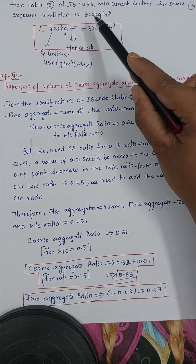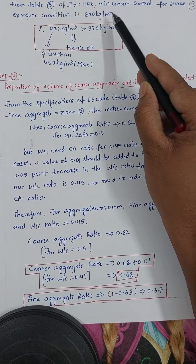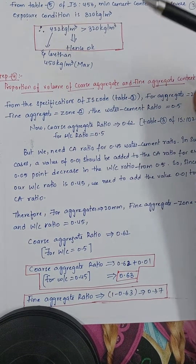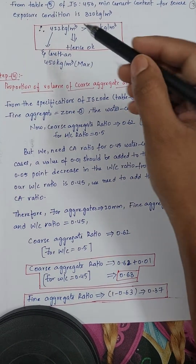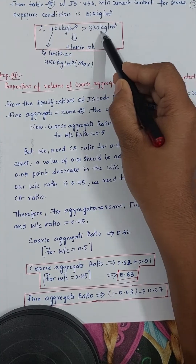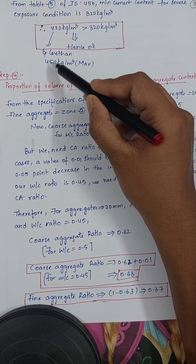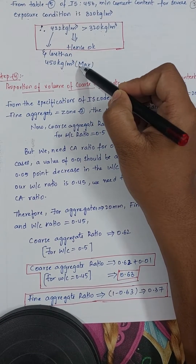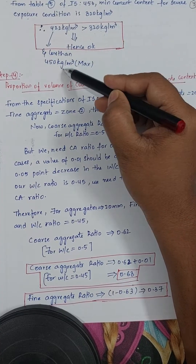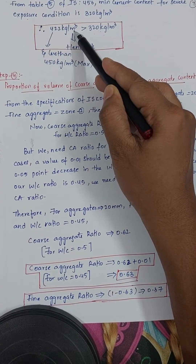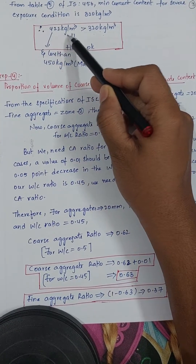From table 5 of IS 456, minimum cement content for severe exposure condition is 320 kg/m³ and maximum is 450 kg/m³. Our calculated value of 422 kg/m³ lies between 320 and 450, so it is acceptable. We proceed with 422 kg per meter cube.